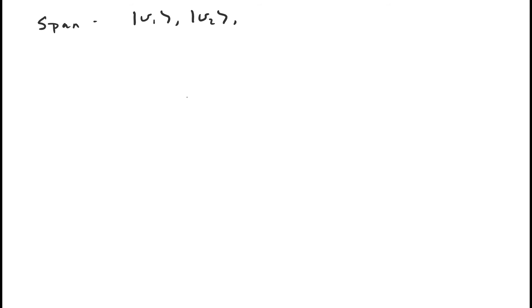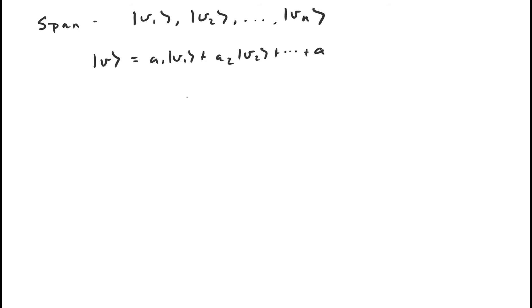Let's say we have n vectors v1 through vn. We say that the span of these vectors is the set of all vectors that can be expressed as a linear combination of these vectors. So any arbitrary vector that can be expressed as a linear combination of vectors v1 through vn — we say this vector is in the span of vectors v1 through vn.